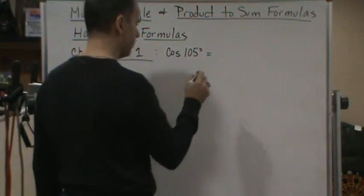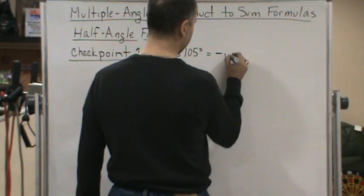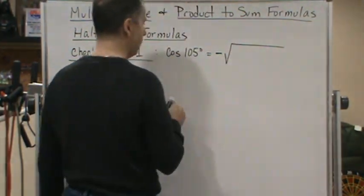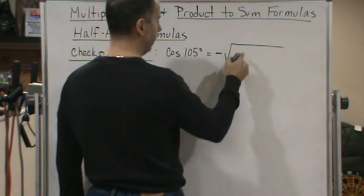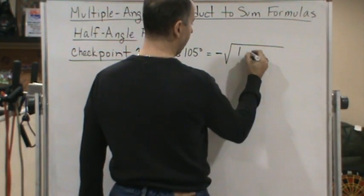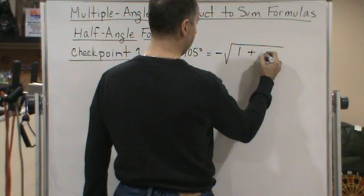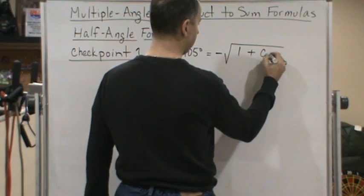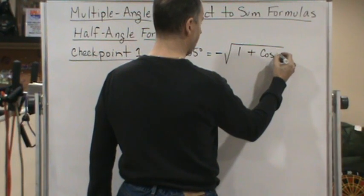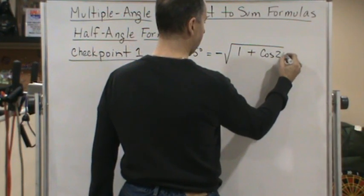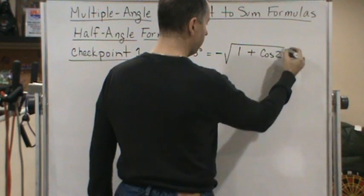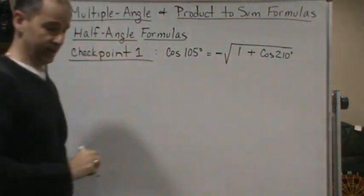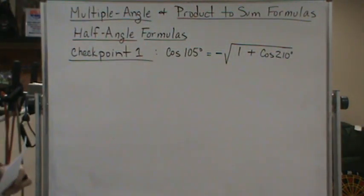So this is going to be negative square root, and it's going to be 1 plus cosine of 210 degrees, divided by 2.